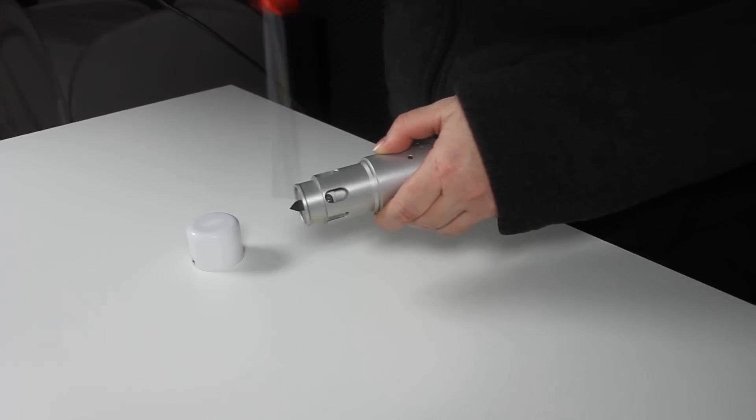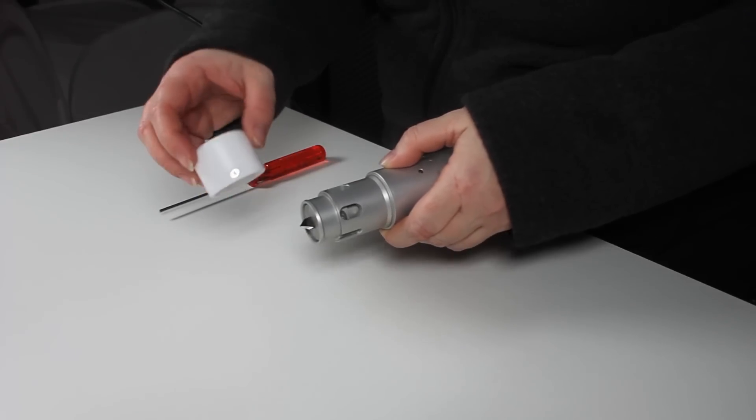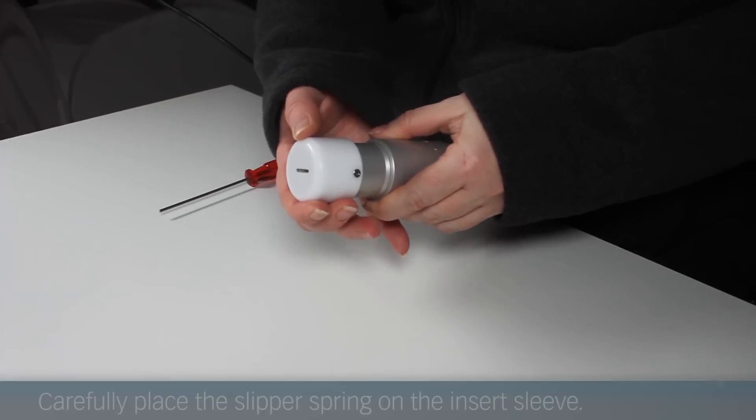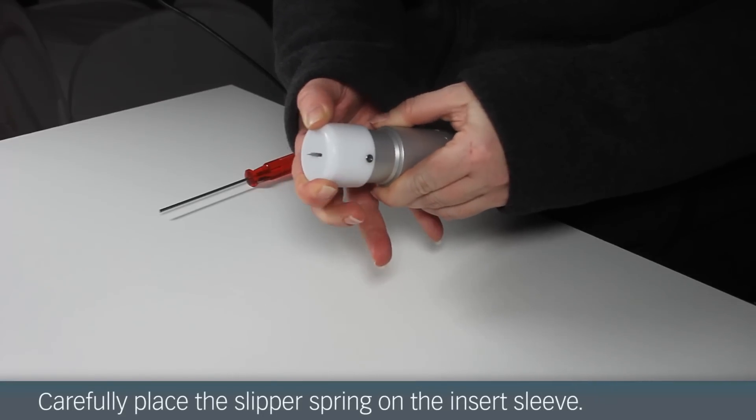Then you carefully place the rigid glide shoe on the insert sleeve. Be careful when doing so. The blade is extremely sharp.